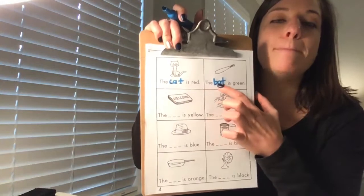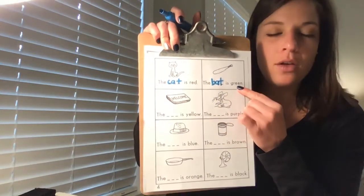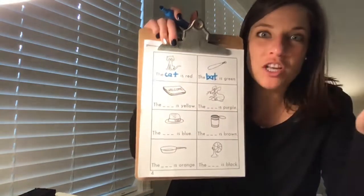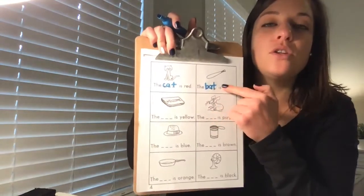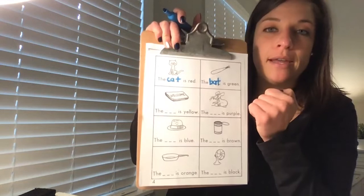The next one says the bat is green. What color is the bat? Green. I don't have my crayons at home today, but when you are finished writing your word, which we've already done, you're going to color that bat green, okay?